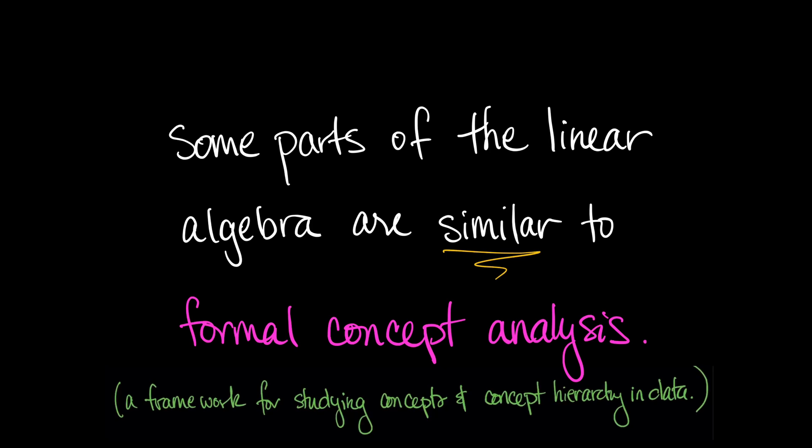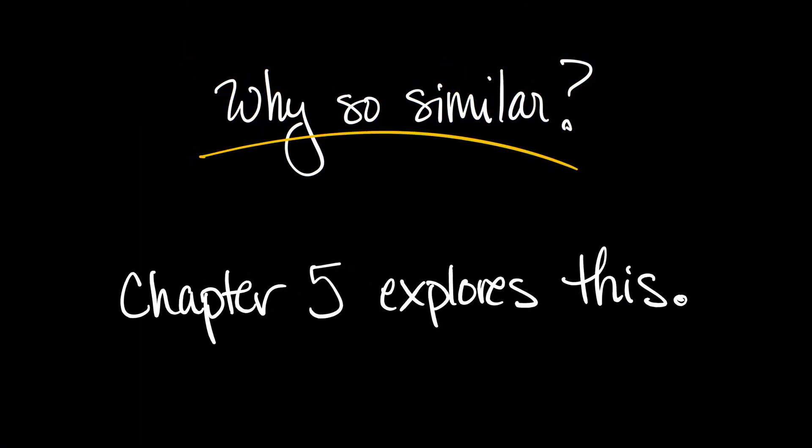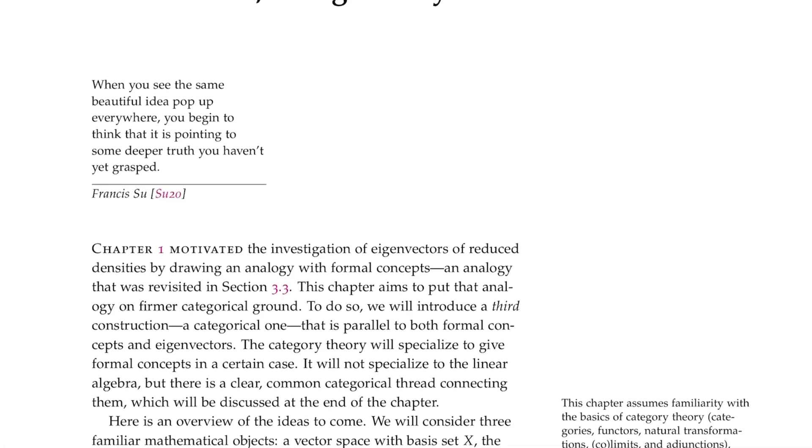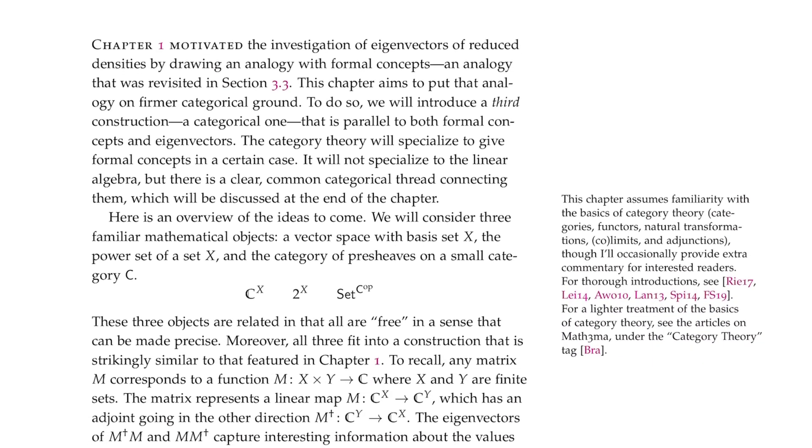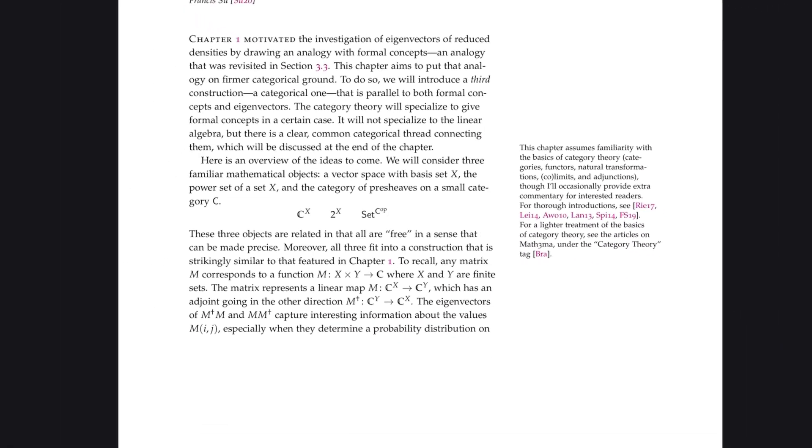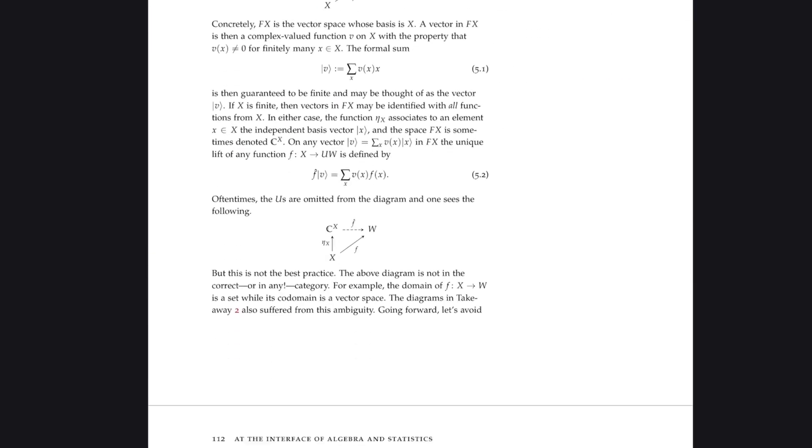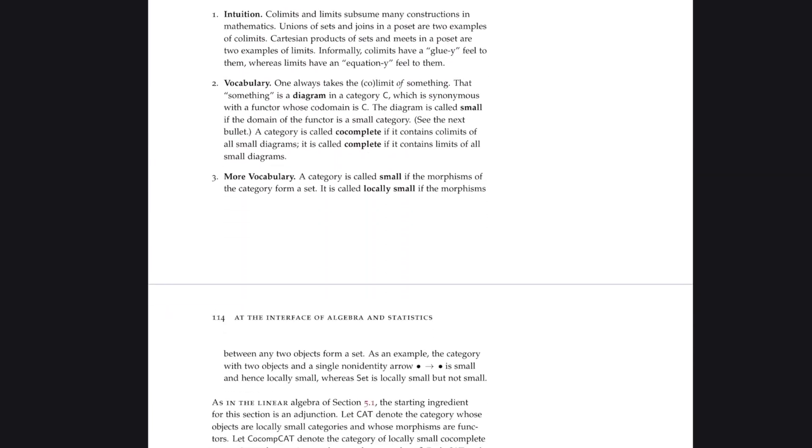Now, whenever you see two constructions that look very similar in different areas of mathematics, it is highly possible that category theory has a lot to say about it. And indeed, category theory does have a lot to say about this. It turns out that there are several interesting free forgetful adjunctions behind the scenes, which gives a remarkable dictionary between linear algebra and category theory. So, formal concepts are introduced in chapter 1 of the thesis, and later revisited from the perspective of category theory and linear algebra in chapter 5. So, that's one application of my thesis to mathematics.